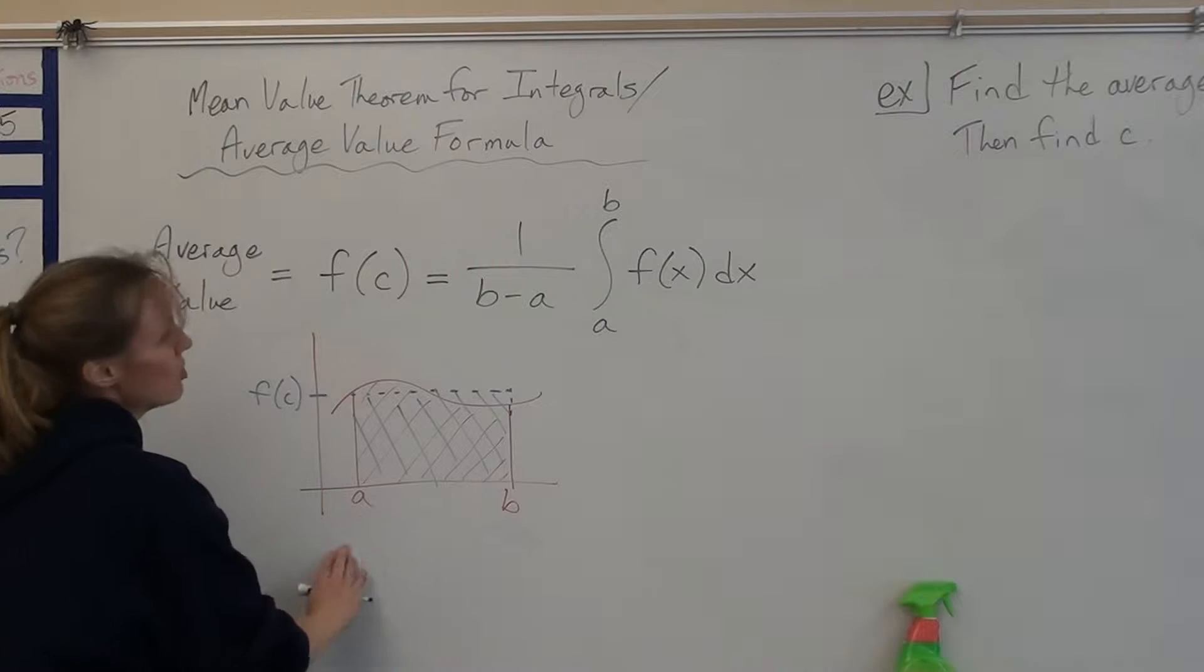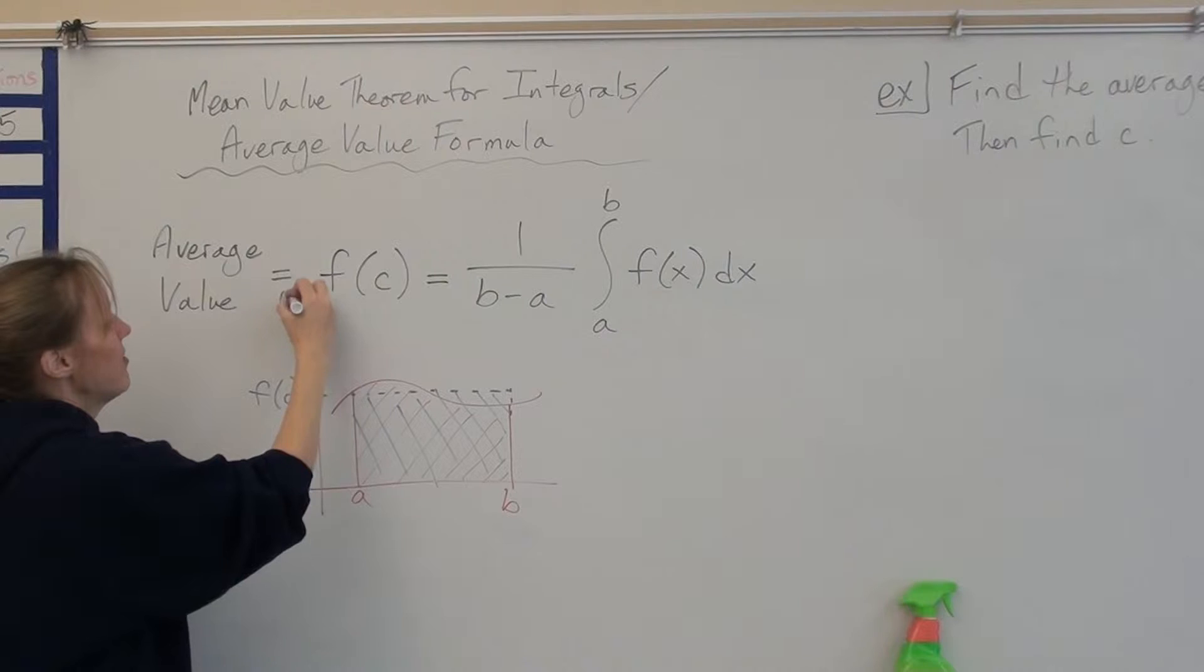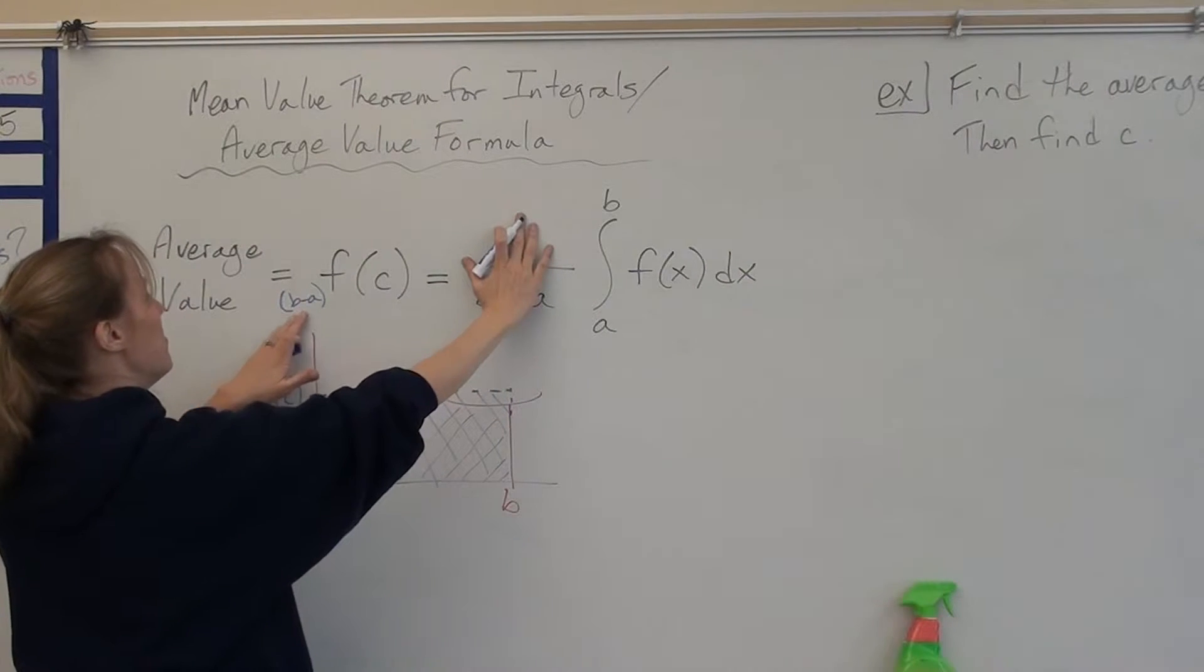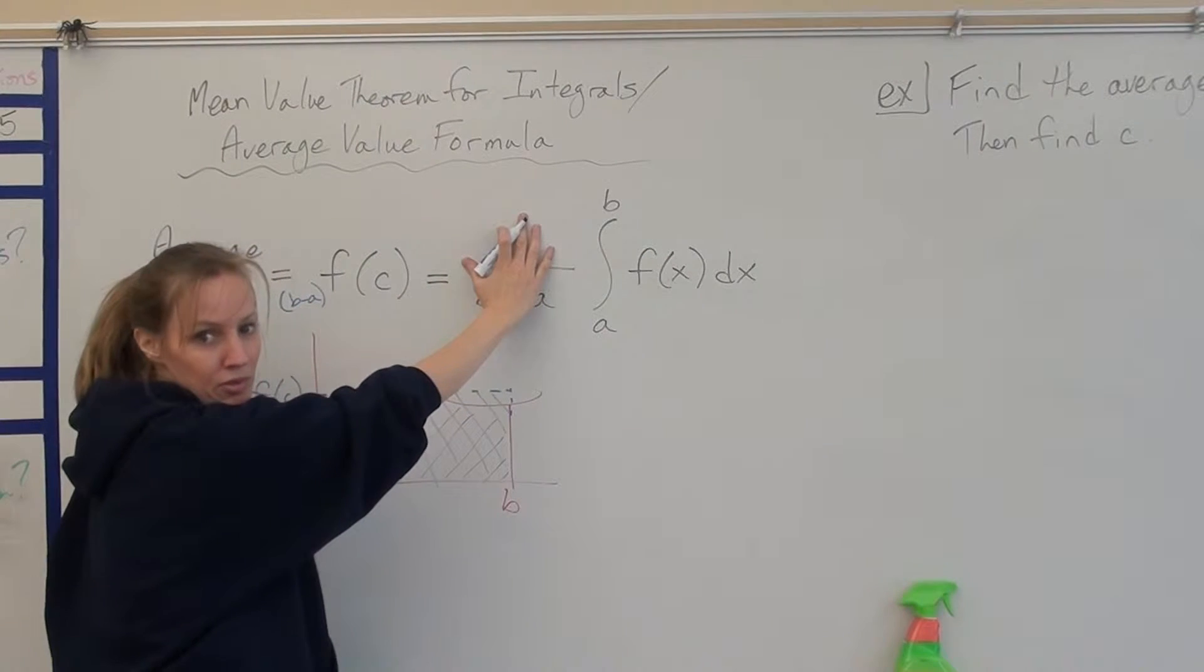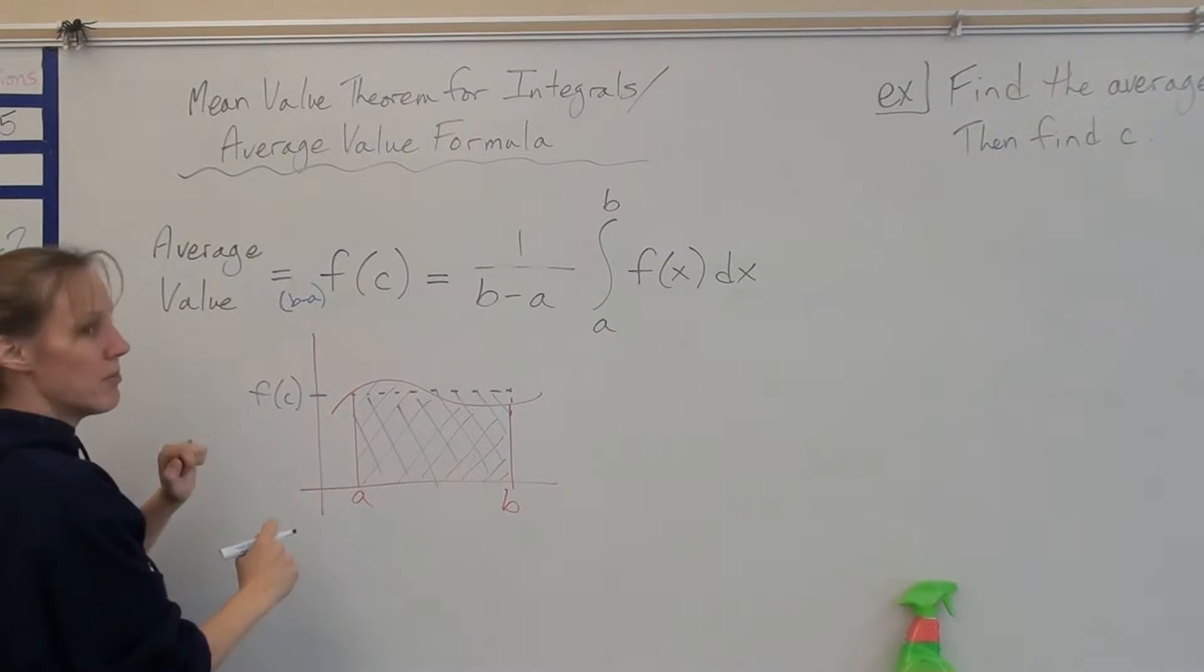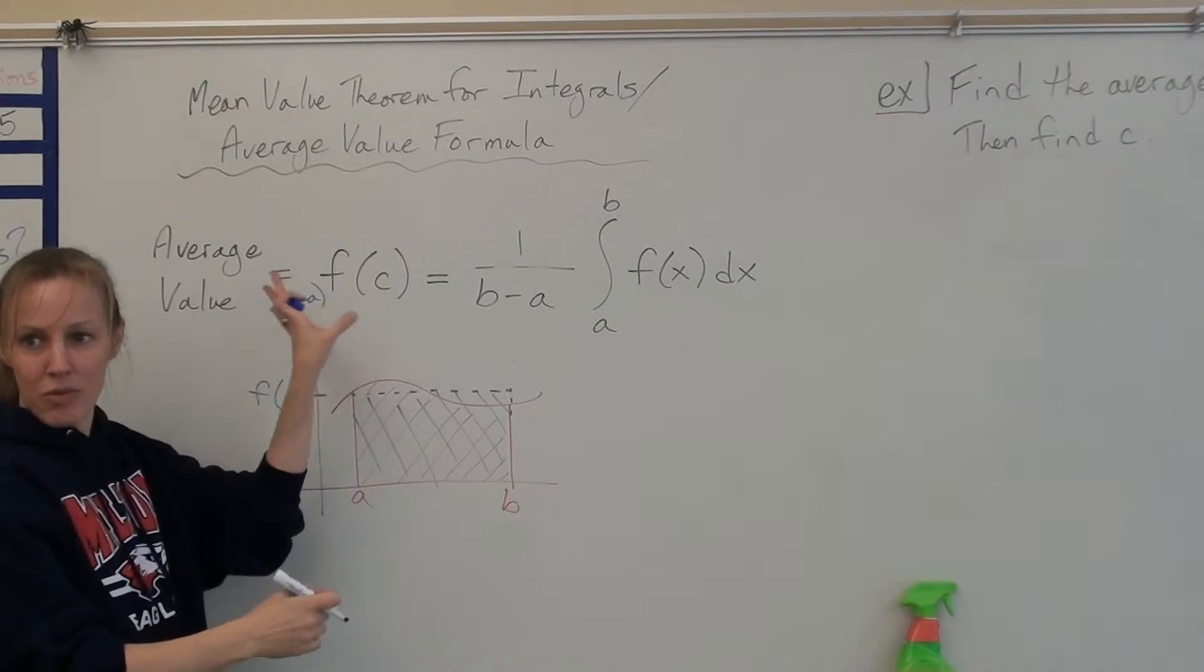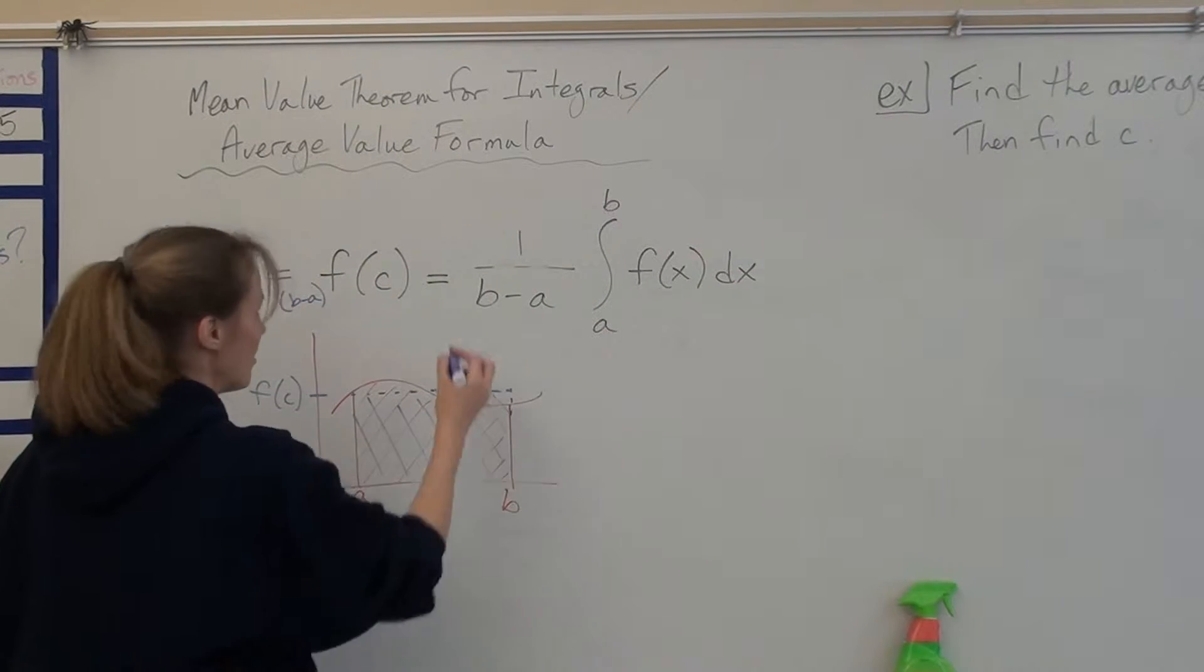So if you took the b minus a and moved it up here, what you'd have is b minus a times some number equals area under the curve. So what you're getting is width times some number, which is this height, equals area under the curve. So area of rectangle equals area under the curve. So that's how that formula works, how it's developed.